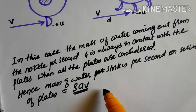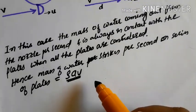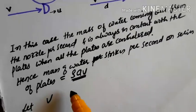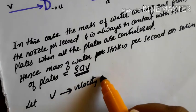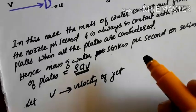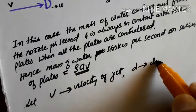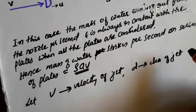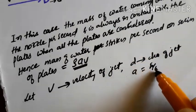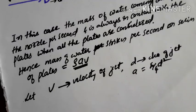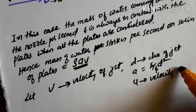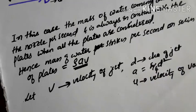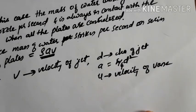Here we take ρAV as mass per second. V represents velocity of the jet, d represents diameter of the jet, A can be written as (π/4)d², which is the area of the jet, and u will be the velocity of the vane.